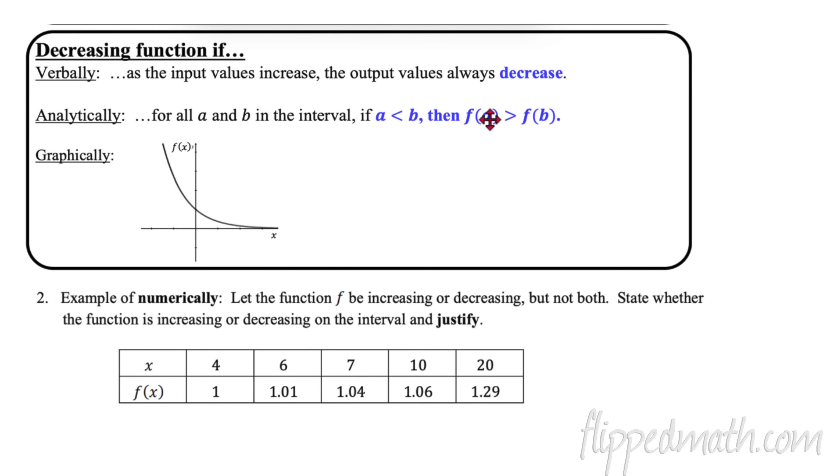So check it out. Did you just replace the word increase with decrease? As the input values increase, which means the X axis, the horizontal axis, as they increase or go to the right, the output values always decrease. That's verbally. Now analytically, if a is less than b, which means on the left of it, then when you evaluate a, it has to be greater than when you evaluate b. That's how it decreases. Graphically, we get this nice graph.